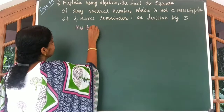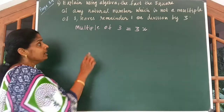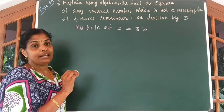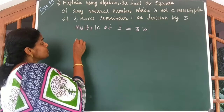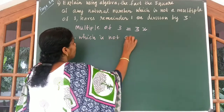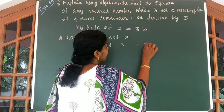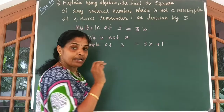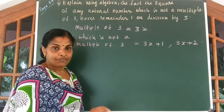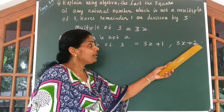A multiple of 3 can be written as 3x. A number which is not a multiple of 3 will have 1 as remainder or also 2 as remainder. So we can write a number which is not a multiple of 3 as 3x plus 1 (because 1 is the remainder), or similarly as 3x plus 2. If a number is not divisible by 3, it will have 1 as a remainder or 2 as a remainder.